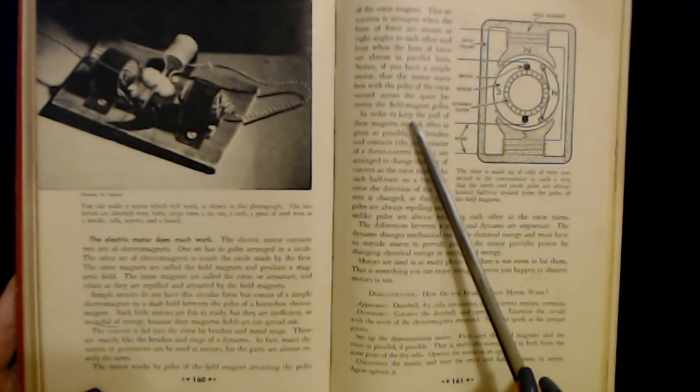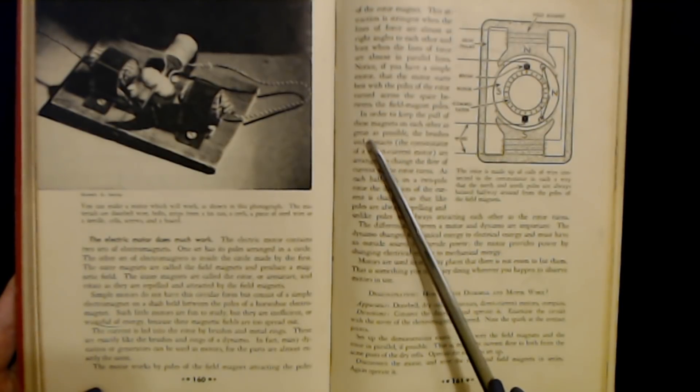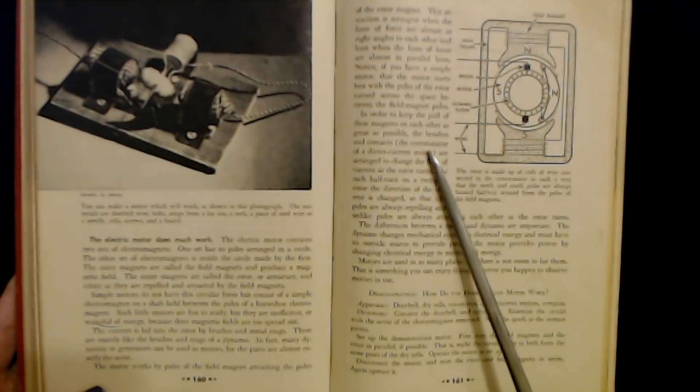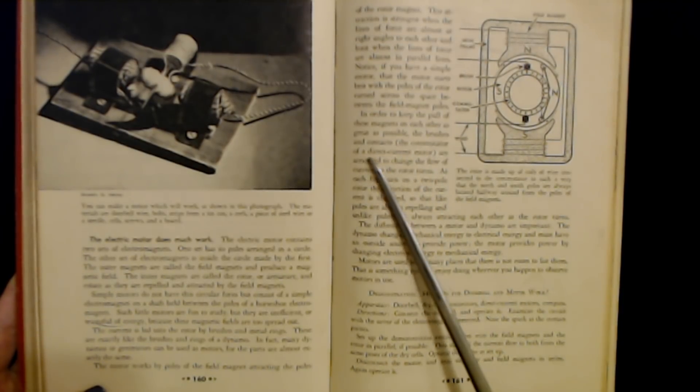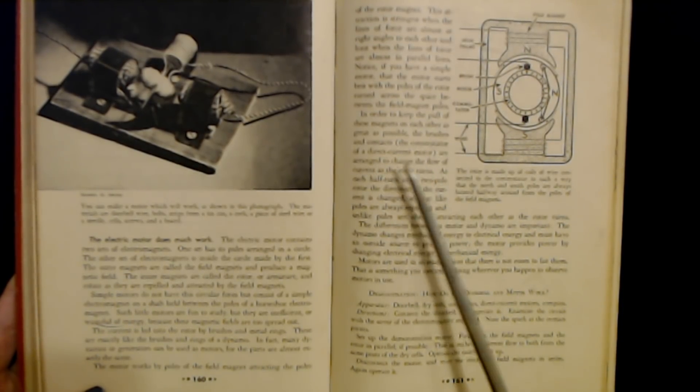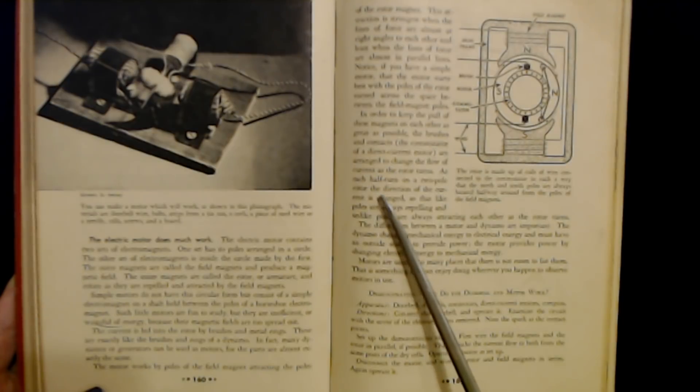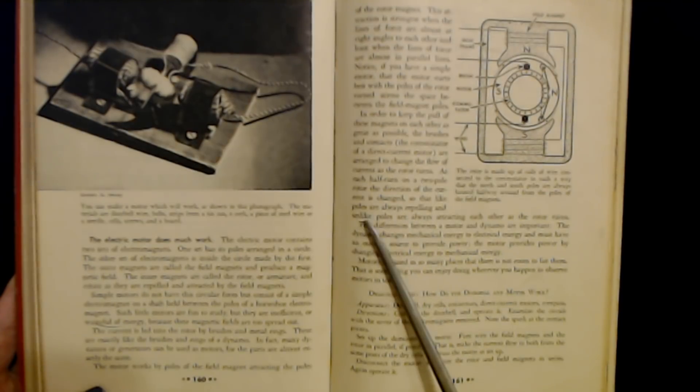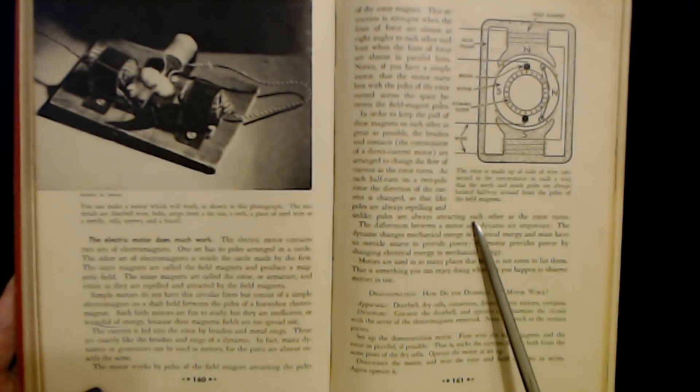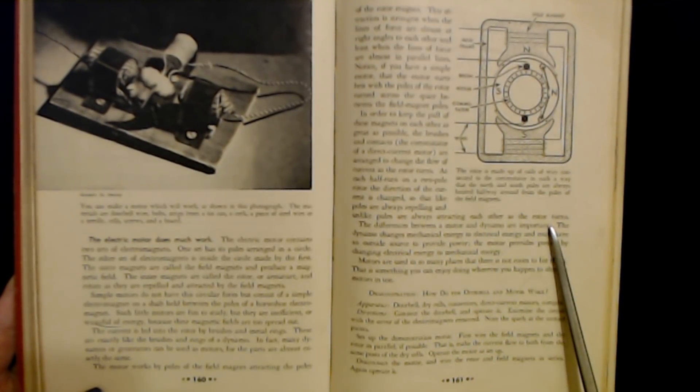In order to keep the pull of these magnets on each other as great as possible, the brushes and contacts, the commutator of a direct current motor, are arranged to change the flow of current as the rotor turns. At each half turn on a two-pole rotor, the direction of the current is changed so that like poles are always repelling and unlike poles are always attracting each other as the rotor turns.